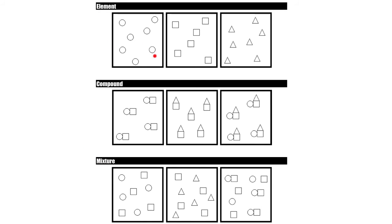Elements. Here are three different examples of elements. The different shapes represent different particles for different elements. In this first sample, there's only one type of particle — one type of atom — so the atoms are all the same, which means this is an element. This is a different element because it's made up of different atoms. And this is another element — it has one type of atom, but they're different from the others.